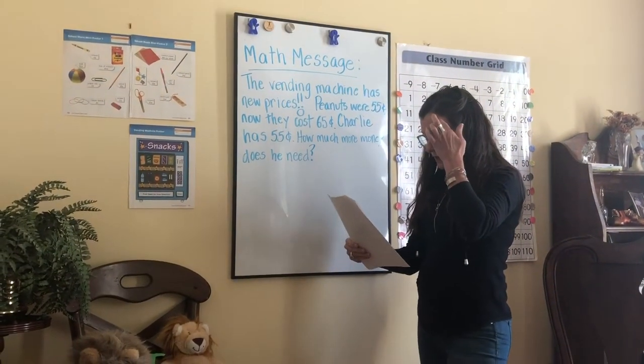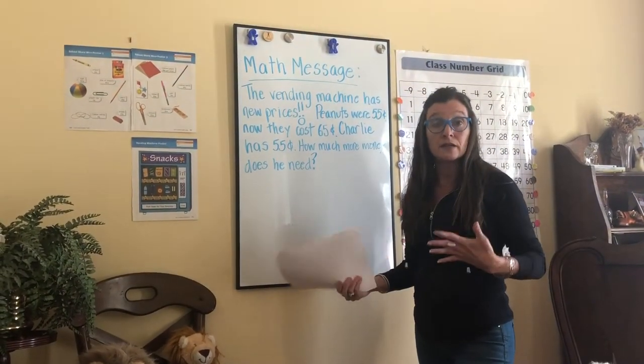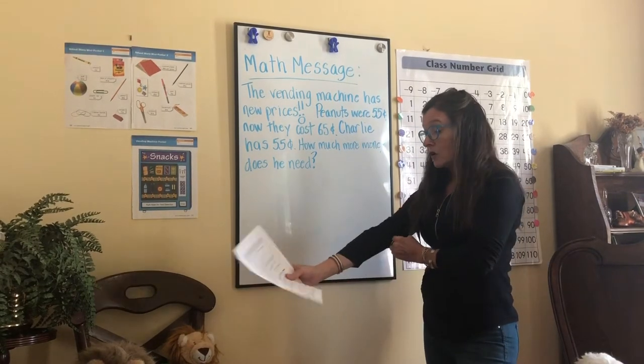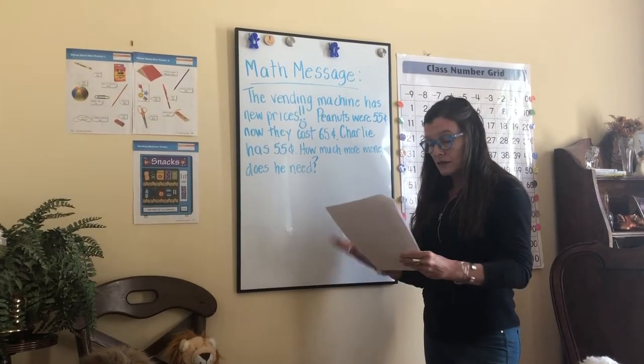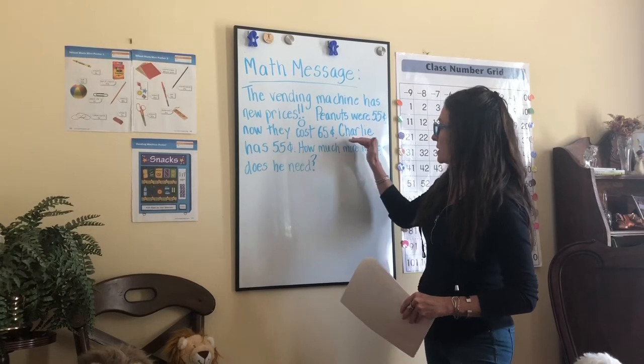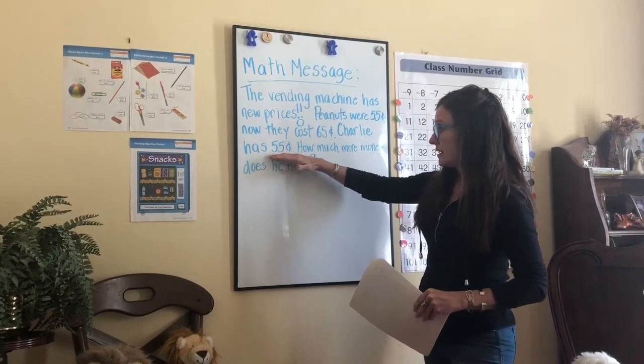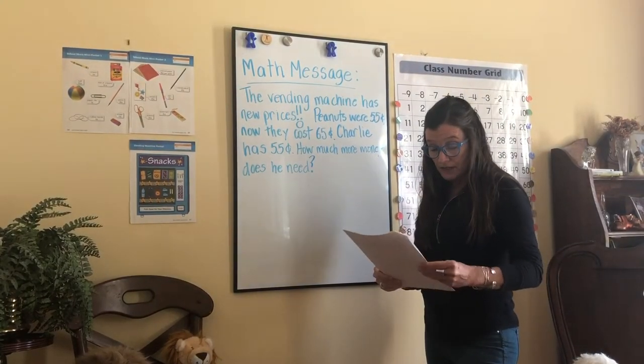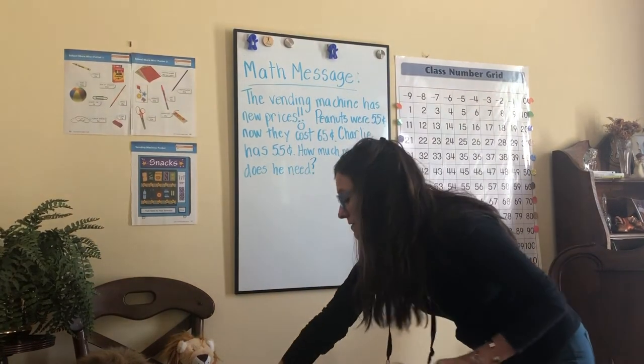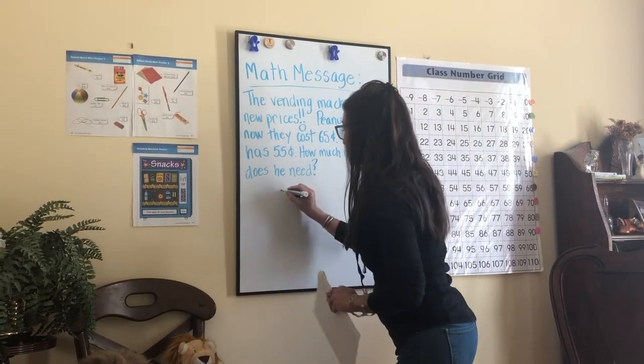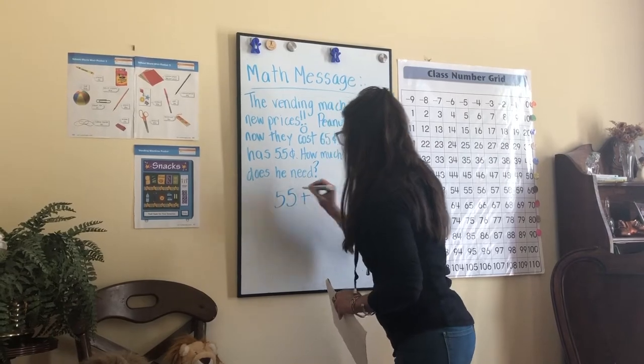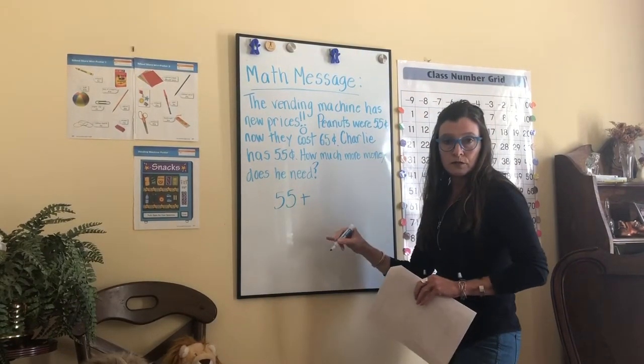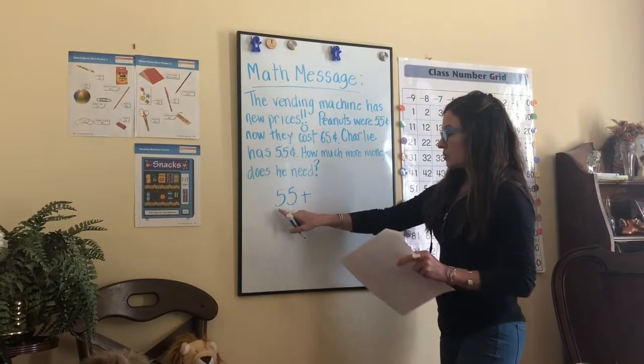So how much more money does he need? Well, let's think about this. We can solve this by counting up. We did that yesterday on your lesson. What I mean by counting up is you start from the money we know Charlie has, and that is 55 cents. So I'm going to write this down and create a number model for you. Again, you don't have to use the cent signs in your number models. We know we're talking about money.